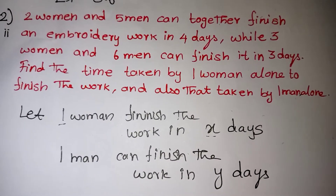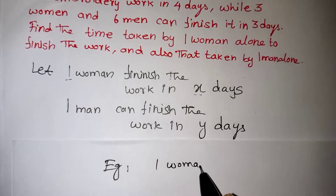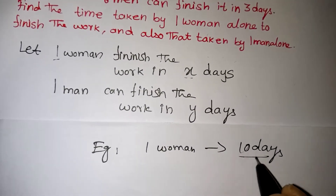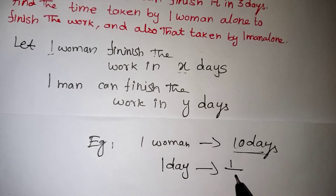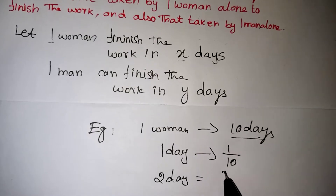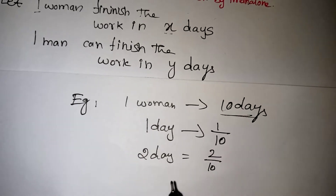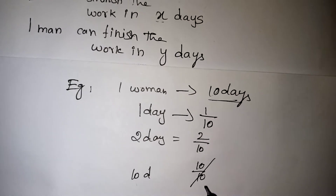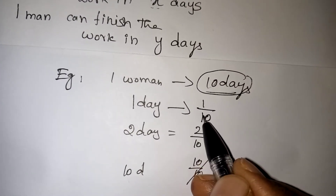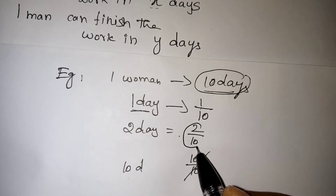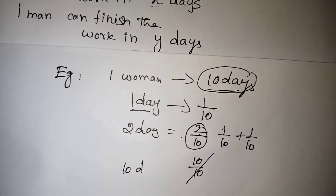Now we have to calculate for 1 day. For example, suppose 1 woman is taking 10 days to complete the work. In 1 day, how much work will be completed by the woman? Definitely that is 1 by 10. The 2nd day it will be 2 by 10, 3rd day 3 by 10. At the end of the 10th day, 10 by 10 work will be completed. So each and every day they will be completing 1 by 10 work — that is the theme of the problem.